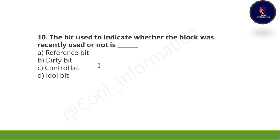Tenth question: The bit used to indicate whether a block was recently used or not is — option A, reference bit; option B, dirty bit; option C, control bit; option D, idle bit. The correct option is option B, which is dirty bit.